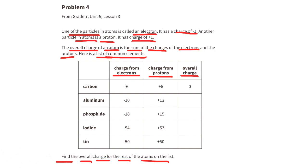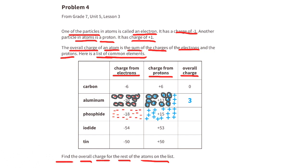Here is a list of common elements — find the overall charge for each atom. Carbon: 6 negatives cancel out 6 positives, so the overall charge is 0. Aluminum: 10 negatives cancel out 10 positives, leaving 3 positives, so the overall charge is 3. Phosphide: 15 positives cancel out 15 of the 18 negatives, leaving 3 negatives, so the overall charge is negative 3. Iodide: 54 negatives and 53 positives — one extra negative, so the overall charge is negative 1. The last element has 50 negatives and 50 positives — that's a zero balance, so the overall charge is zero.